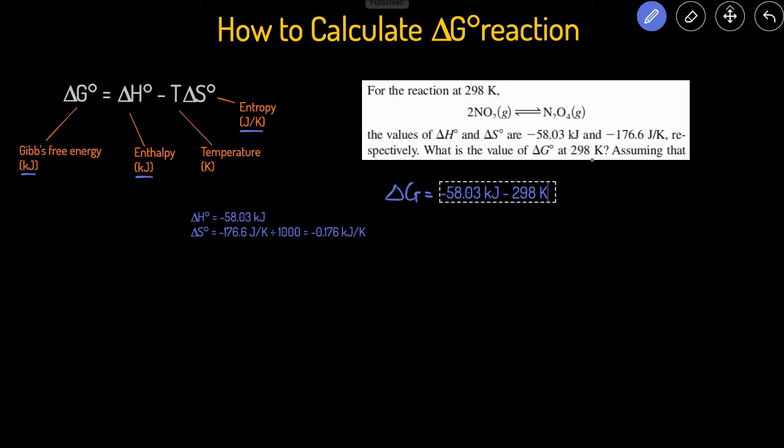Now if they give you the temperature in degrees Celsius, then what you have to do is you have to add 273 to the degrees Celsius to get the degrees Kelvin. But since we already have the degrees Kelvin, we can just plug that in. And the velocity delta S is negative 0.176 kilojoules per Kelvin. And you can see that the Kelvins will cancel out, and we'll be left with the delta G in kilojoules. Now let's see how we can enter this into the calculator.